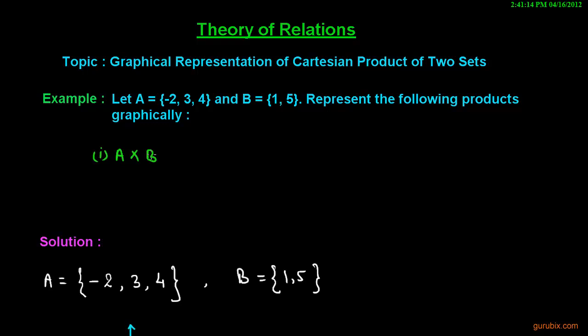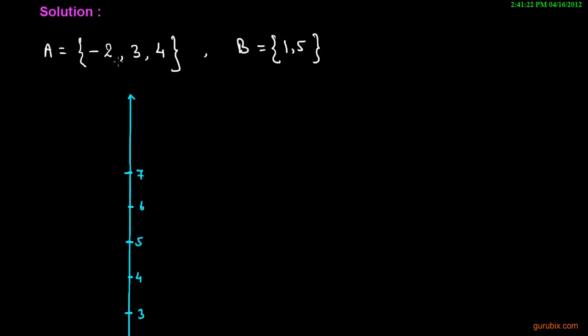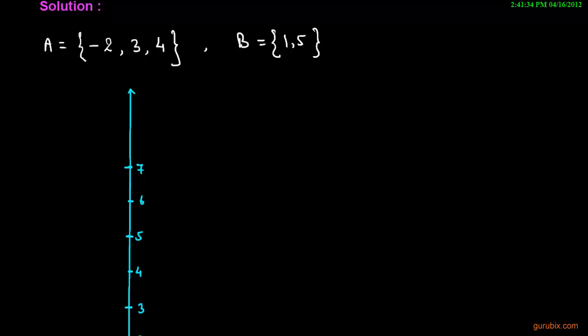Let us represent the product A × B. First of all, we shall collect the sets: A = {-2, 3, 4} and B = {1, 5}.